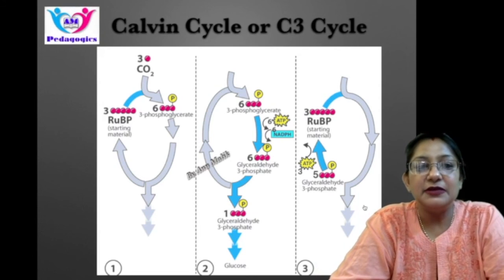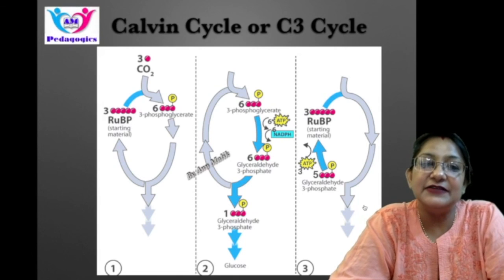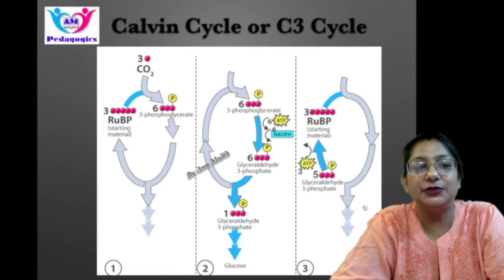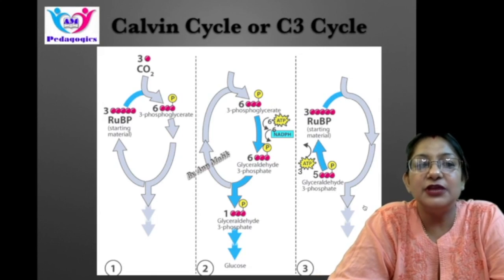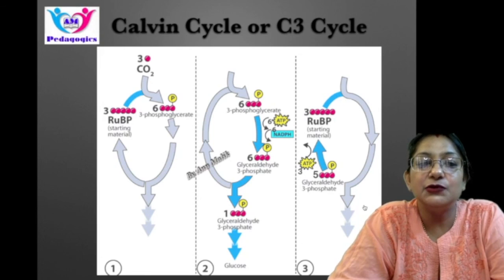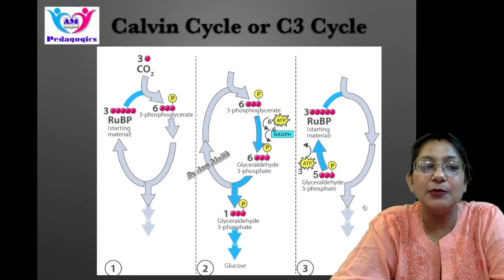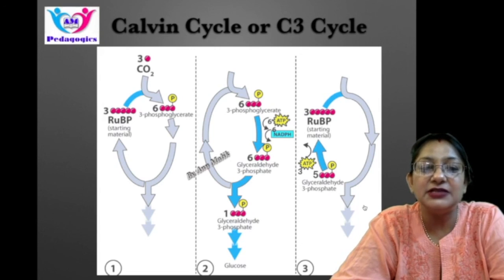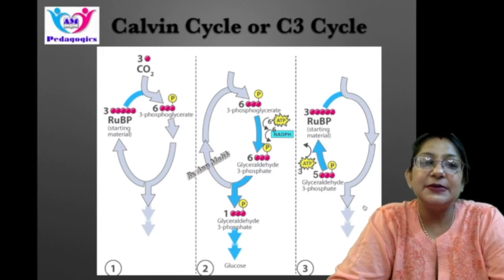The first stage is carbon fixation. In the Calvin cycle, carbon dioxide is reduced. Carbon dioxide binds to RuBP to form two 3-carbon molecules of phosphoglycerate. The enzyme which carries out this reaction is ribulose bisphosphate carboxylase (RuBisCO). This enzyme works very slowly, processing only about 3 molecules of RuBP per second, compared to a typical enzyme which processes about 1000 substrate molecules per second.